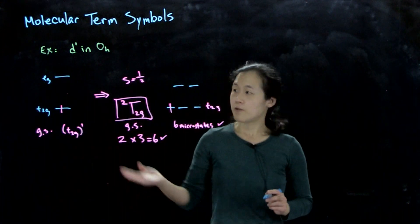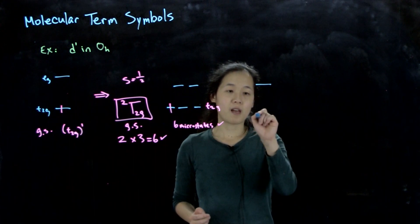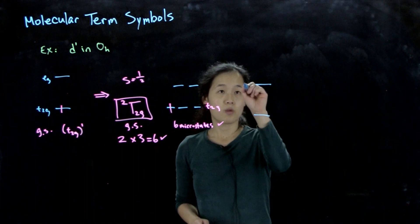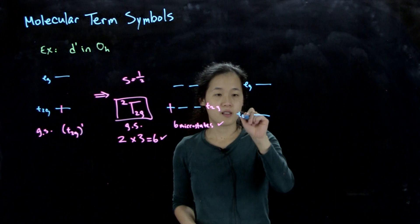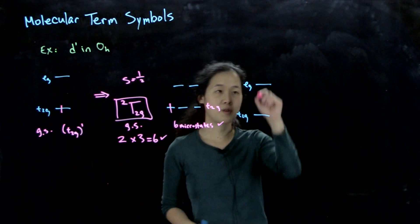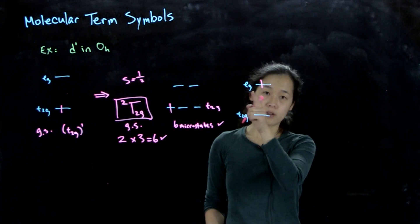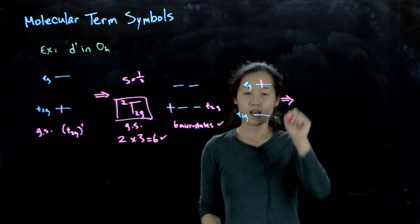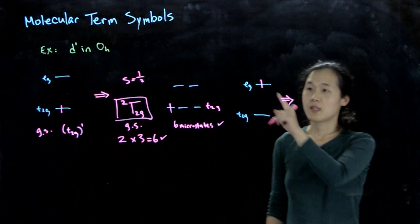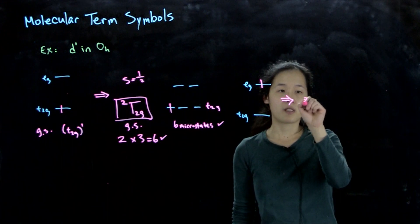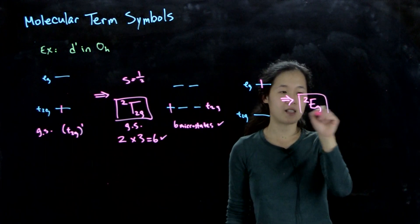And now for a d¹ configuration, we can also have an excited state where we excite one of our electrons into the eg orbital. So our only electron, rather. And then so now, again, this is easy because we only have one electron. So we can directly get out the orbital symmetry. So this excited state here will be a doublet eg excited state.